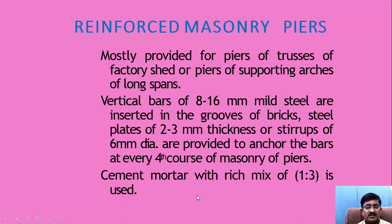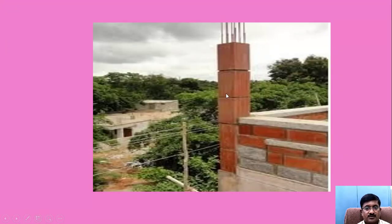Reinforced masonry piers: when blocks are used for the construction of a vertical column, it is called a pier. These are mostly provided for piers of trusses of factory sheds, piers supporting arches, and long spans. Vertical bars of 8 to 16 mm mild steel are inserted in the grooves of the bricks. Steel plates of 2 to 3 mm thickness or stirrups of 6 mm diameter are provided to anchor the bars at every fourth course of masonry piers. Cement mortar with a rich mix of 1:3 is used.